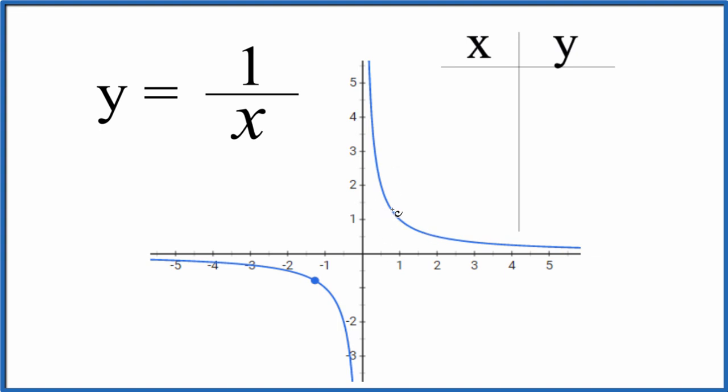So why don't we put values in for x, figure this out, see what we get for y. Let's just start with 1. So if we have 1x, y equals 1 over 1, that's just 1.